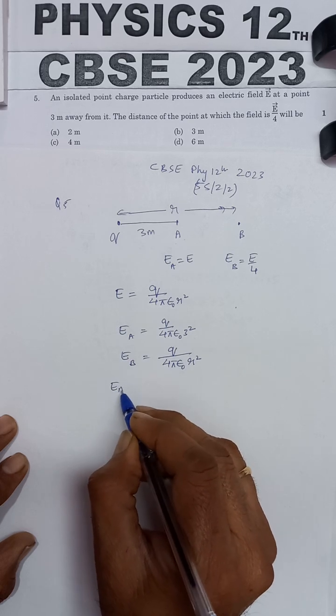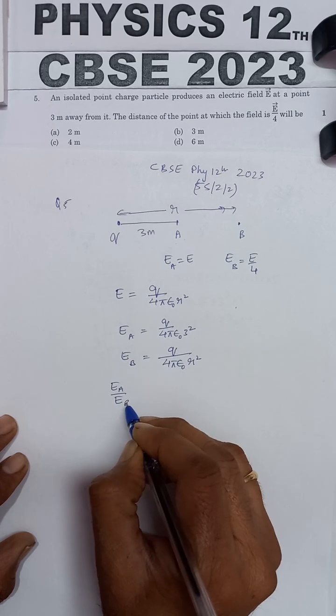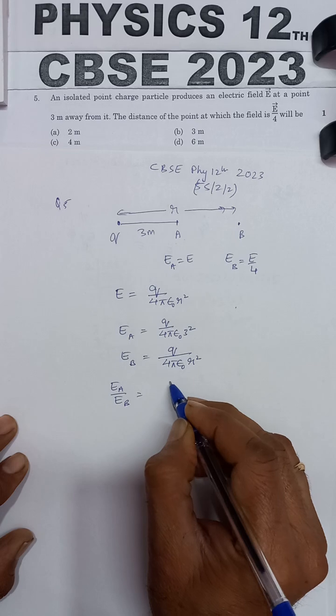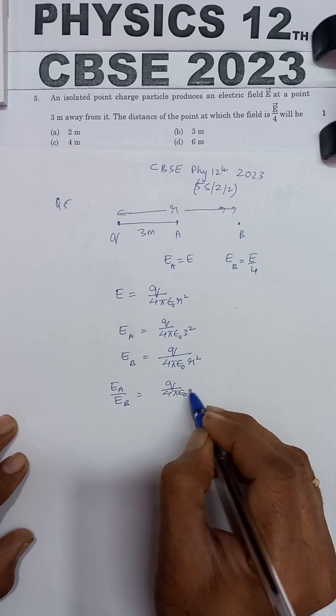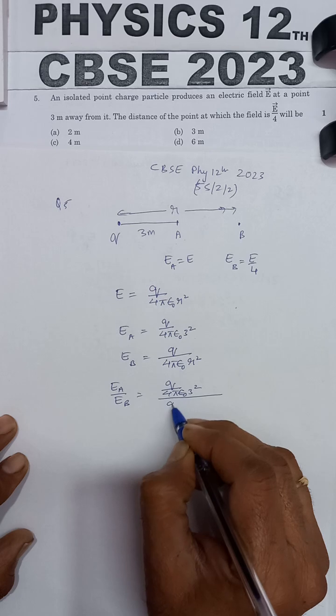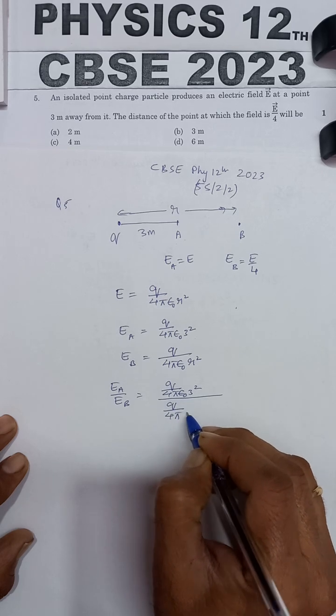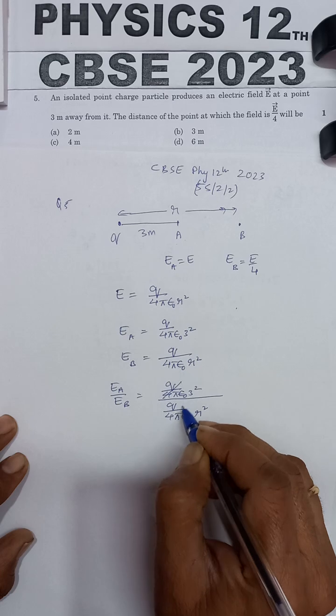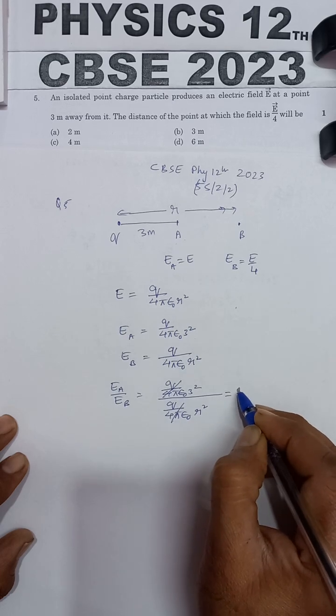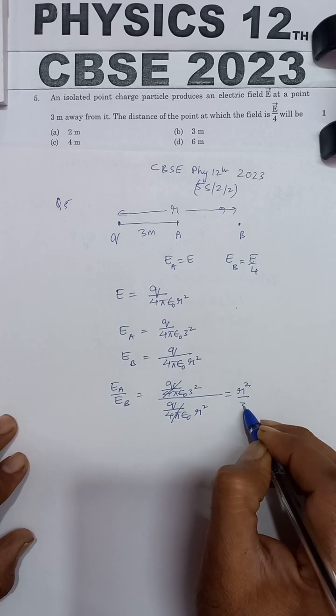We will divide EA upon EB. EA upon EB equals Q upon 4πε₀ times 3² upon Q upon 4πε₀ times r². Now Q upon 4πε₀ cancels, then r² upon 3².